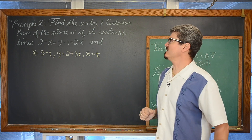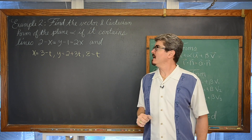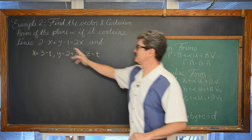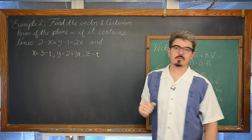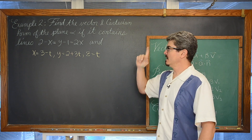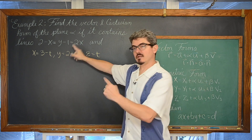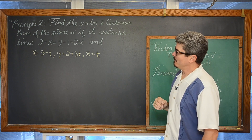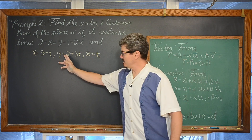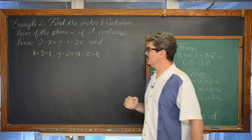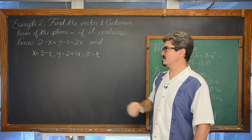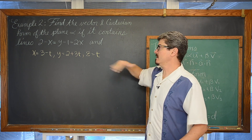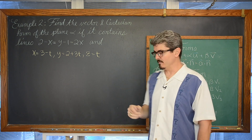We are going to find the vector in Cartesian form of the plane alpha if it contains the lines 2-x equals y-1 equals 2z, which is in Cartesian form, and x equals 3-t, y equals 2 plus 3t, and z equals t. This second equation of a line is in parametric form.